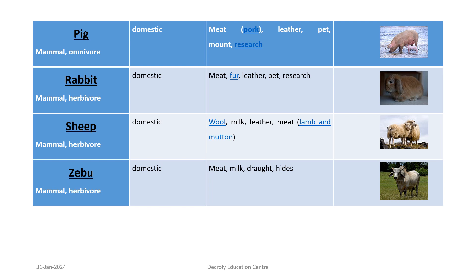Rabbit: mammal, herbivore; domestic. Commercially used for meat, fur, leather, pet, and research. Sheep: mammal, herbivore; domestic. Commercially used for wool, milk, leather, and meat (lamb and mutton). Zebu: mammal, herbivore; domestic. Commercially used for meat, milk, draught, and hides.